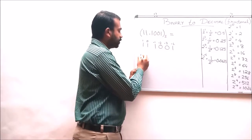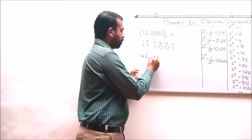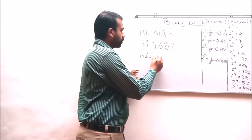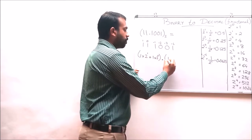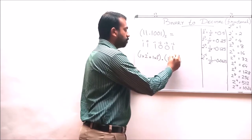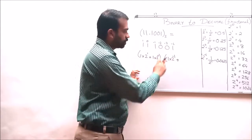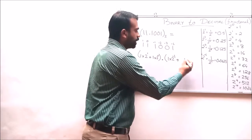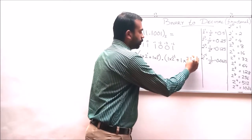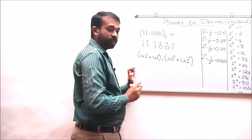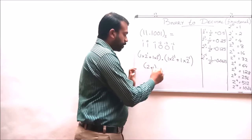What we have to do is: 1 into 2 raised to 1, plus 1 into 2 raised to 0, plus 1 into 2 raised to minus 1, plus 0 into any number is 0. Again, 0 into any number is 0. So we write 1 into 2 raised to minus 4. So 1 into 2 raised to 1 is 2, plus 1, giving us 3.